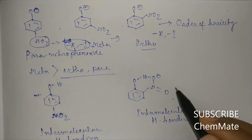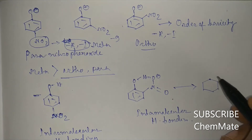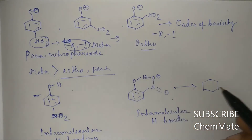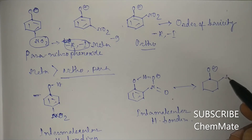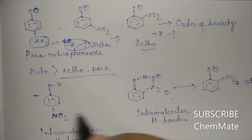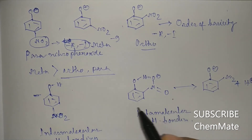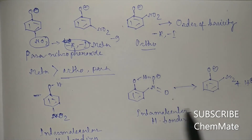So ortho nitrophenol is quite reluctant to give this H plus, and that's why the acidity of ortho nitrophenol is quite lesser than para nitrophenol. So the basicity of the conjugate base of ortho nitrophenol will be higher than para.